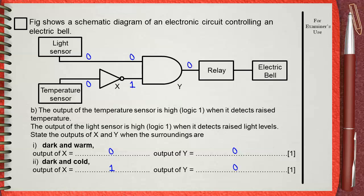The last case, triple i, bright and cold. Bright for the light sensor means one. Cold for the temperature sensor means zero. The zero of the temperature sensor will be inverted by the NOT gate to one.